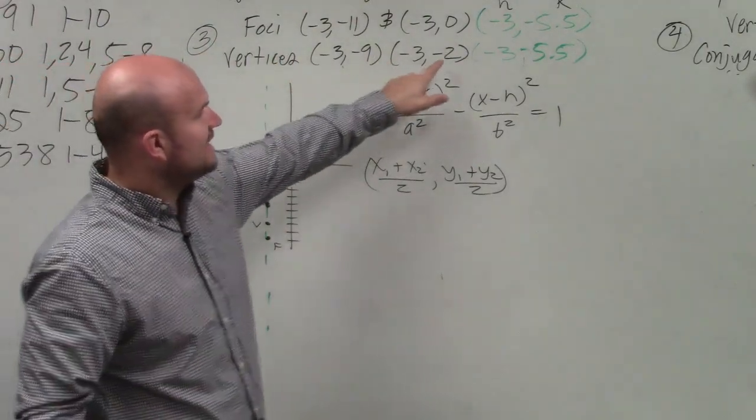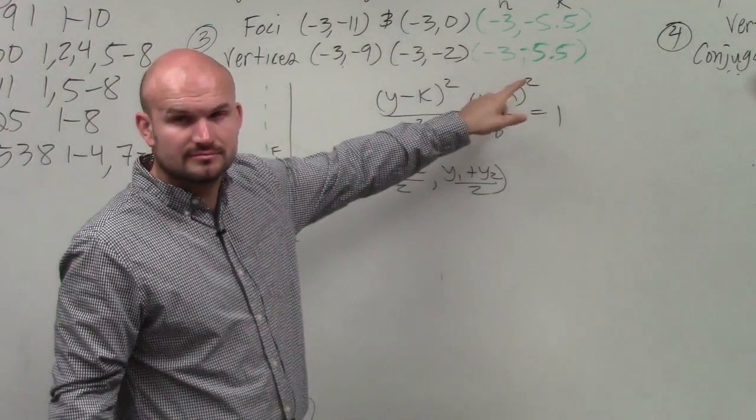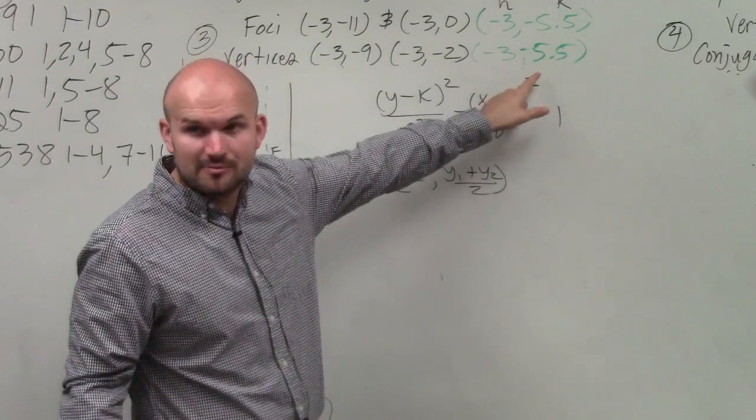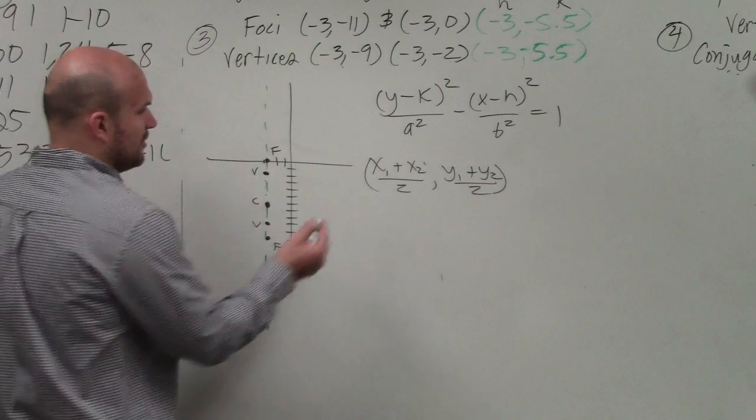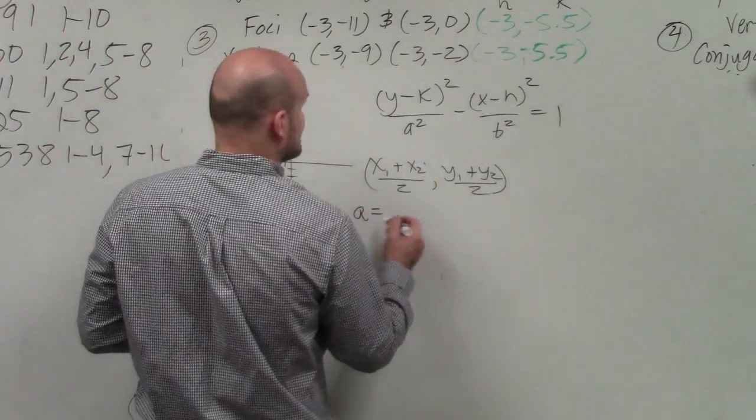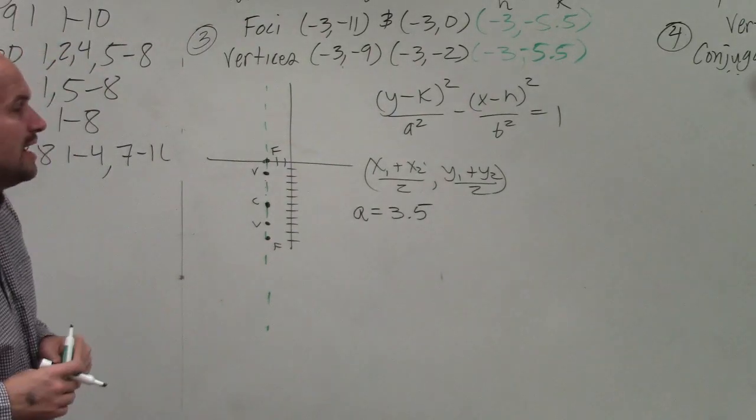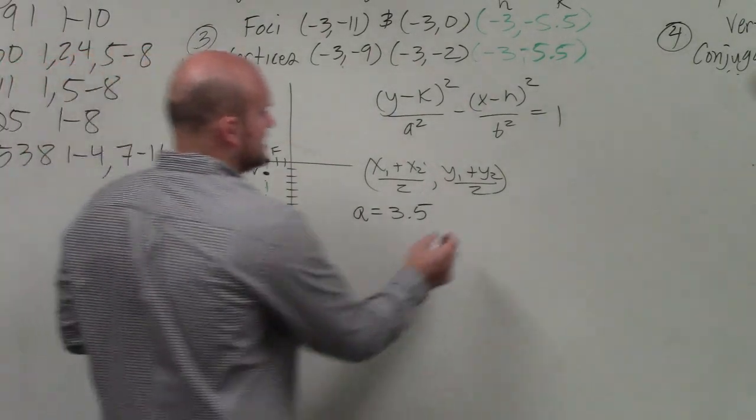Well, if I'm at negative 2 and I'm going to negative 5.5, therefore a is going to be 3.5. So I can say a is equal to 3.5.